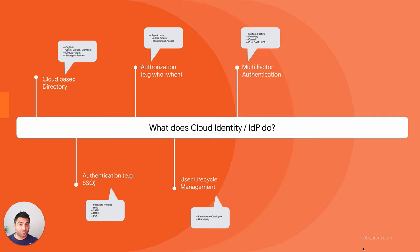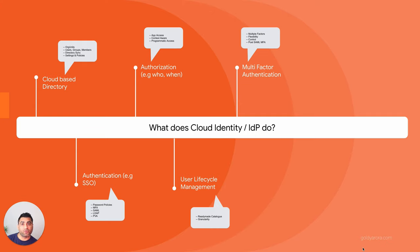You have flexibility in implementing MFA. You can set an enforcement date so users start receiving notifications to enroll. You can control the scope — whether MFA is enforced for your whole organization or just a subset of users. You can also differentiate by group: for example, require only security keys for your executive organization, while Google Authenticator or push notification is acceptable for the rest of your users.